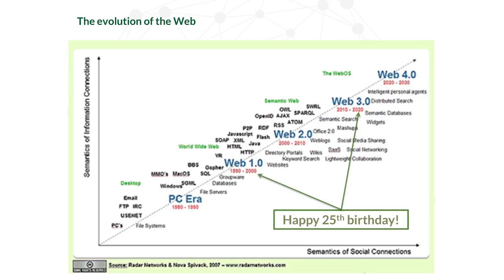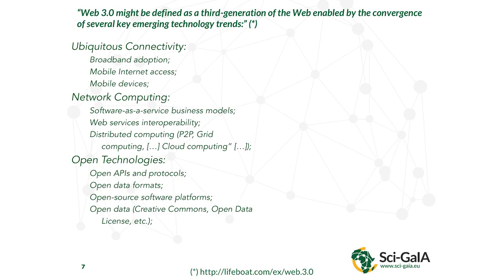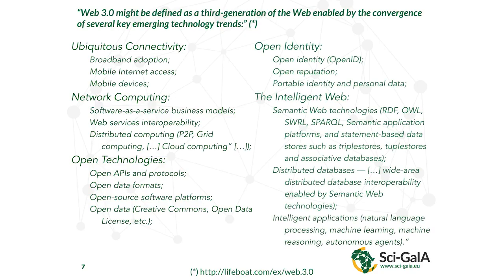The worldwide web is evolving — we celebrated in 2020 the 25th anniversary of the web very recently, and now we are in the third generation of the web, what people call Web 3.0. In Web 3.0 we have several services and concepts like ubiquitous connectivity, network computing, open technologies, open identities, the so-called intelligent web, and the semantic web, which has revolutionized the way we share content and process data.